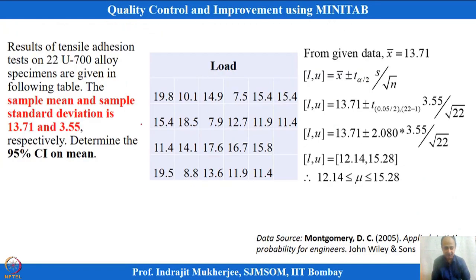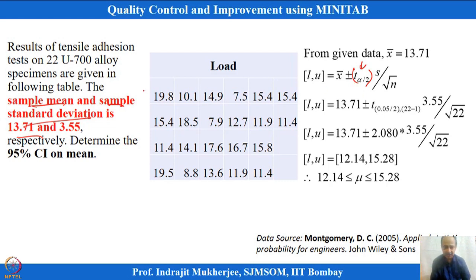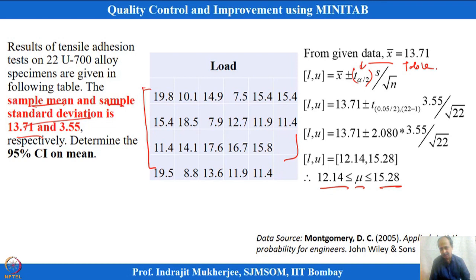When sigma is not known — only sample mean and sample standard deviation are given — instead of Z we need a T value to build the confidence interval. The T-distribution is a specific distribution derived from the Z-distribution and must be used in this case. The underlying assumption is that the data follows a normal distribution, which must be verified before computing the confidence interval.